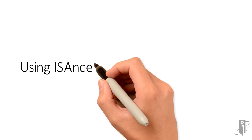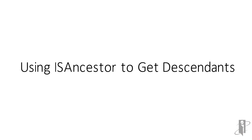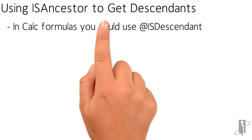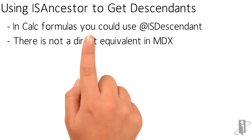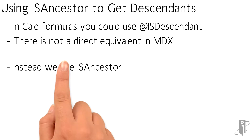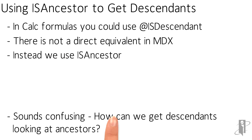So how are we going to use isAncestor to get descendants? In calc formulas, you could use the atDescendants function or isDescendant type of function, but there's no direct equivalent in MDX. Instead, we use the isAncestor function.